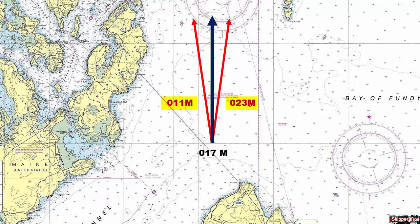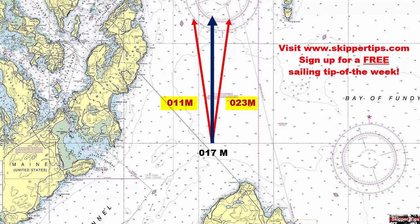Now you have a visual picture of how the magnetic disturbance might affect you on each side of your base sailing track line. Adjust the sailing course line as necessary to avoid any dangers or obstructions in your path. Now you know an easy sailing navigation technique you can use for safer sailing anywhere in the world.